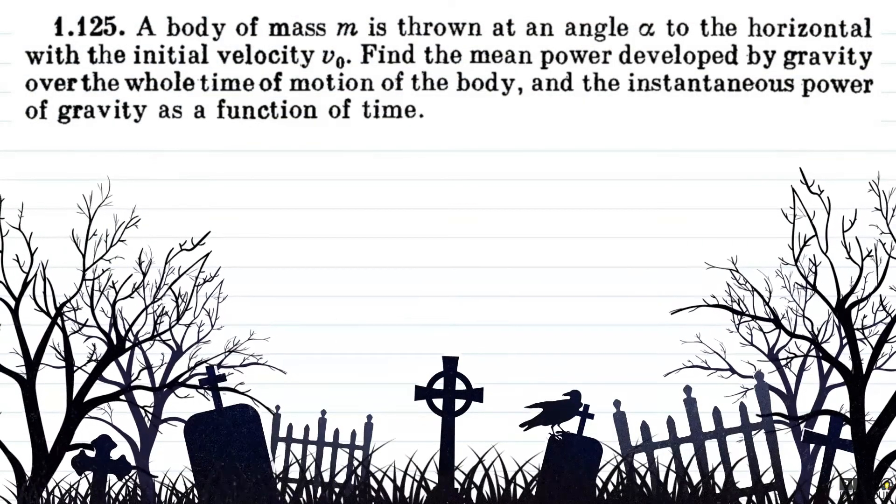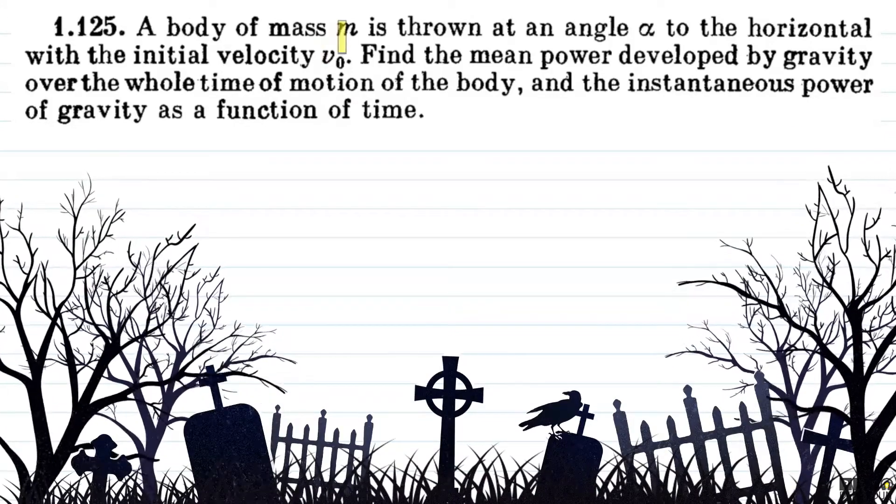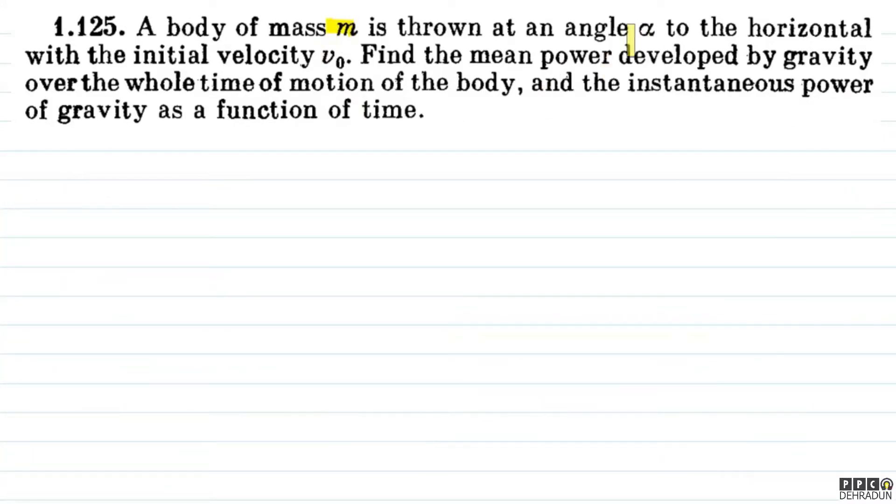Let's have a look at this beautiful problem from Irodov. The question says, a body of mass m is thrown at an angle alpha to the horizontal with the initial velocity v-naught. Find the mean power developed by gravity over the whole time of motion of the body, and the instantaneous power of gravity as a function of time.